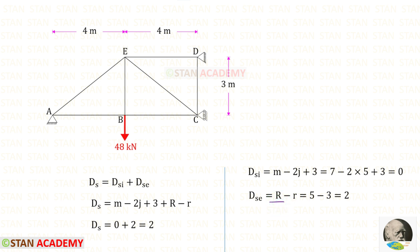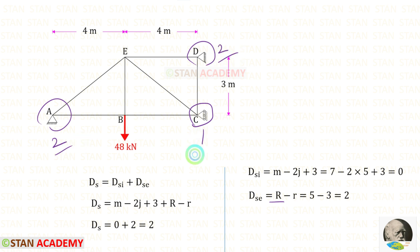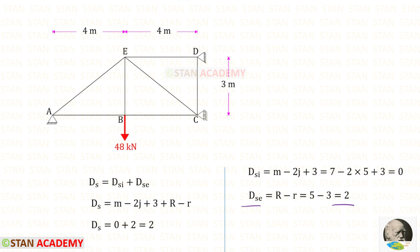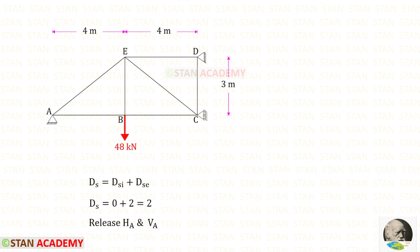R is the number of reactions to be found. At points A and D there are hinged supports, so there will be two reactions each, and at point C there is a roller support with only one reaction. So 2 + 2 + 1 = 5. The available equilibrium conditions are 3: sigma M = 0, sigma V = 0, and sigma H = 0. For DSE we get 2, so the degree of static indeterminacy of the truss is 2.